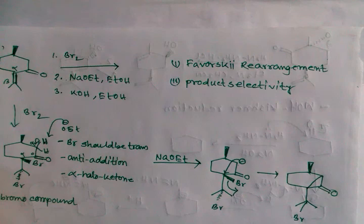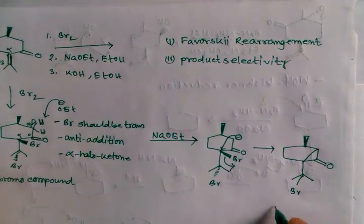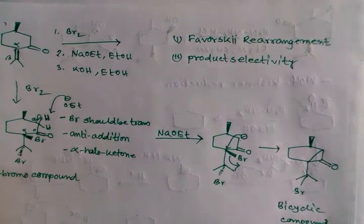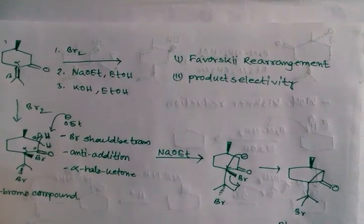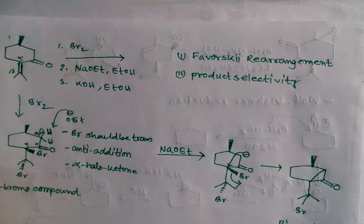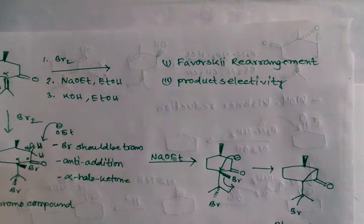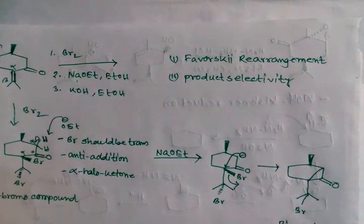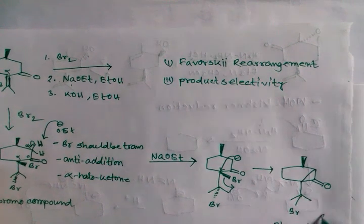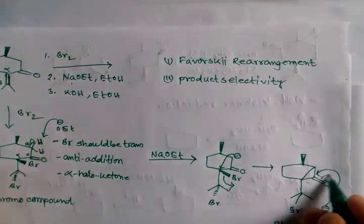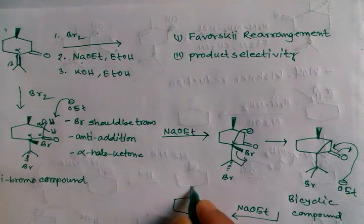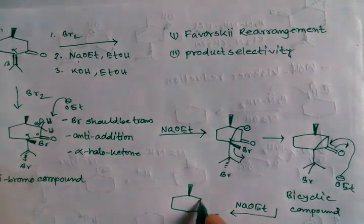We get a bicyclic compound — that is a bicyclic intermediate formed here. Again in the presence of sodium ethoxide, sodium ethoxide attacks here and this bond breaks, so we get a bicyclic compound with a negative charge here.